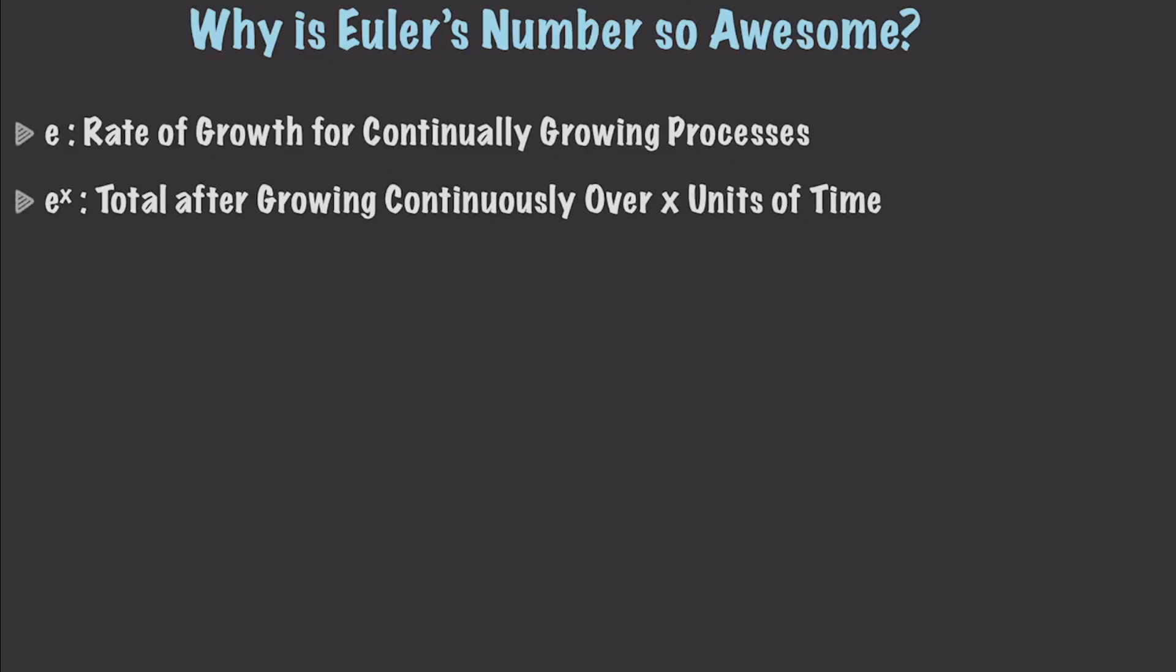Well, basically, Euler's number is just, and again, I'm going to start off complicated and get easier. It is the rate of growth for all continually growing processes. Really complicated. And don't worry, you'll understand it here in about one minute. e to the x is going to be the amount we'll have after starting at one and growing continuously over x units of time.